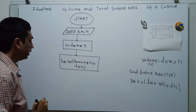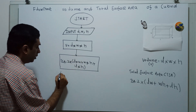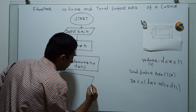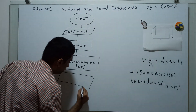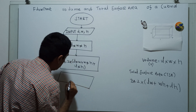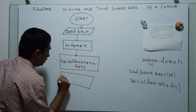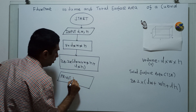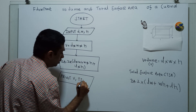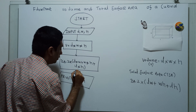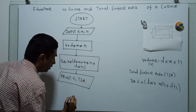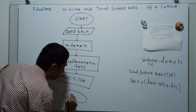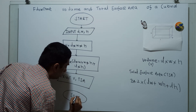Now I am printing the volume and the total surface area. Print volume and total surface area. I am now ending the flowchart — Stop is the logical end of the flowchart.